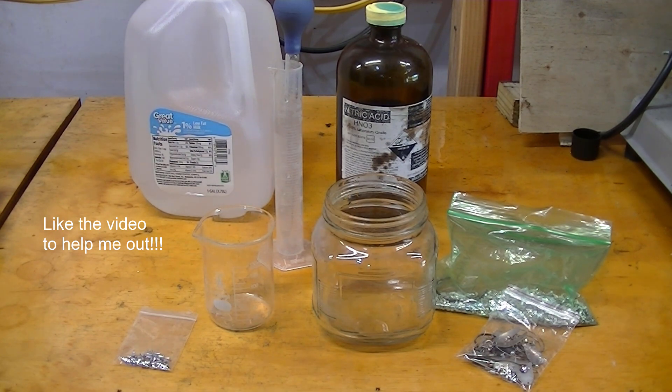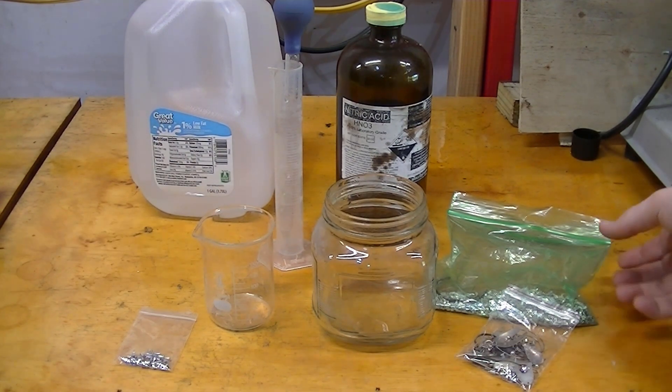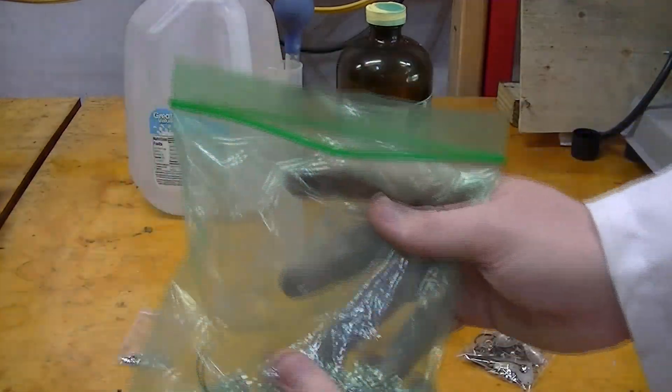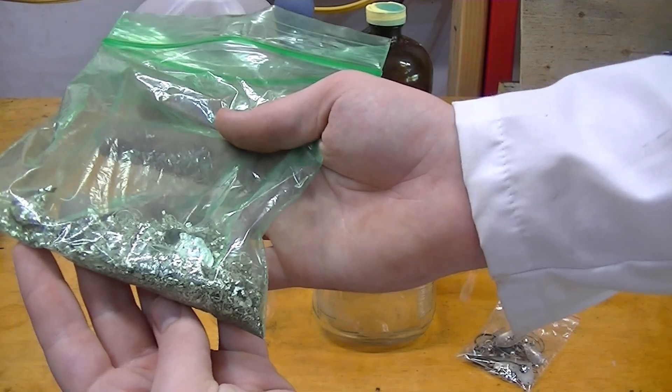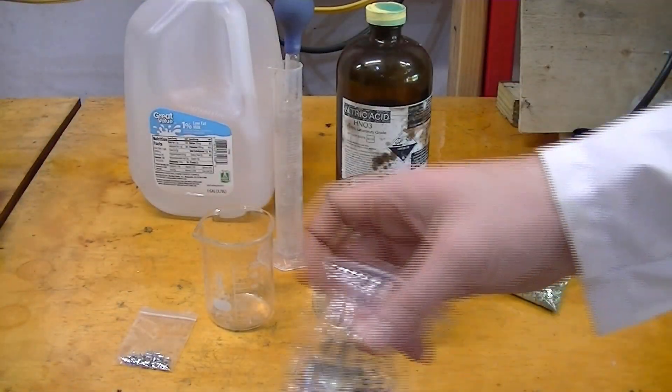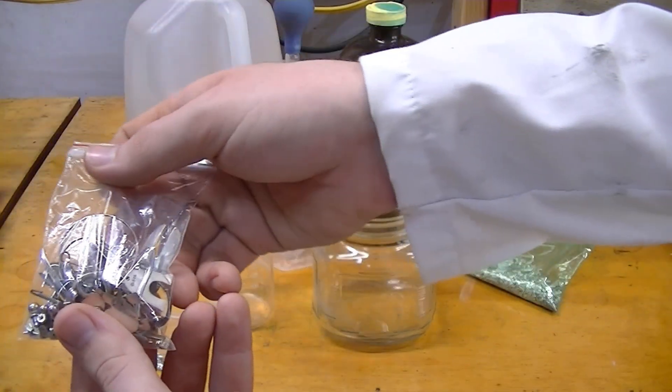On to the video. What we're going to do is turn this sterling silver into pure silver. Now, these are just scrap shavings I have from working on rings, but this is a scrap lot that I got off eBay.